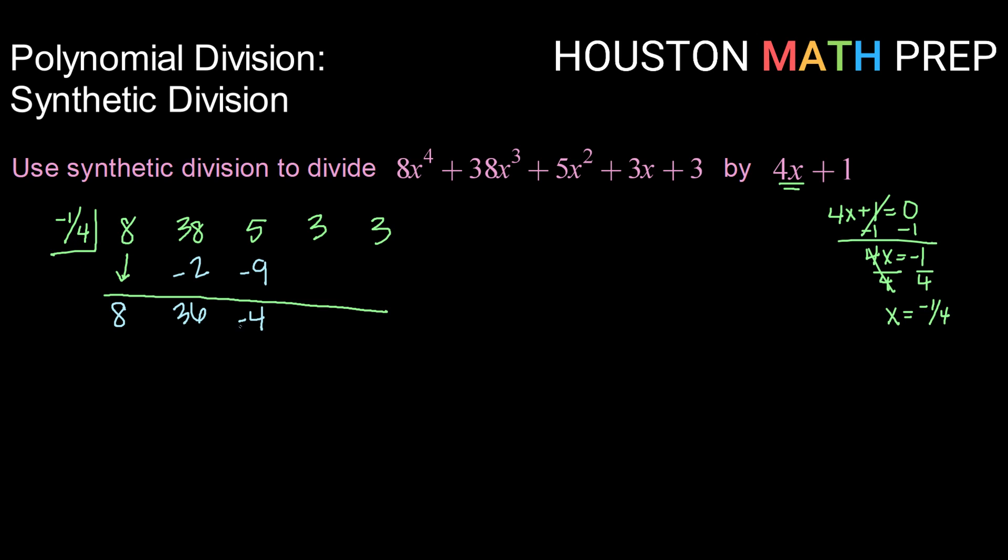Negative 1 fourth times negative 4 is positive 1. Add down: 3 plus 1 is 4. Negative 1 fourth times 4 is negative 1. Add down: 3 plus negative 1 is 2.